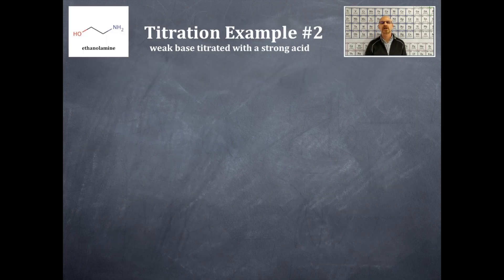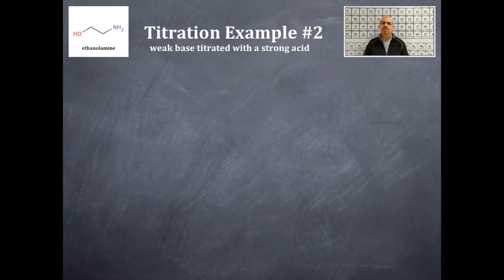Today we're going to do titration example number two. This is very similar to example number one, but there are some significant differences. This time we're going to do a weak base — in this case it's going to be ethanolamine — and it's going to be titrated with a strong acid.